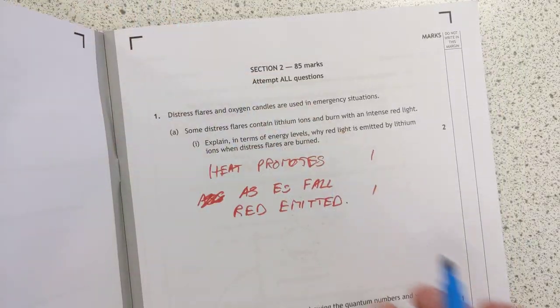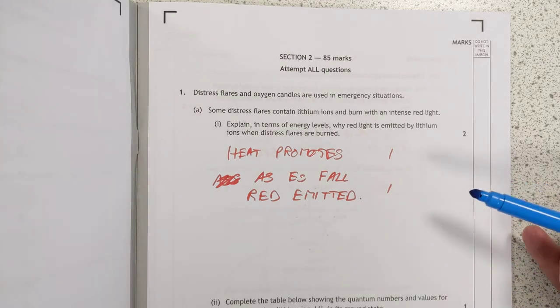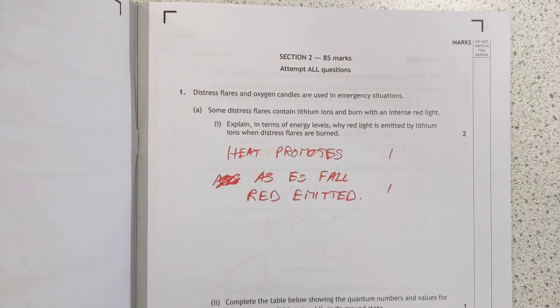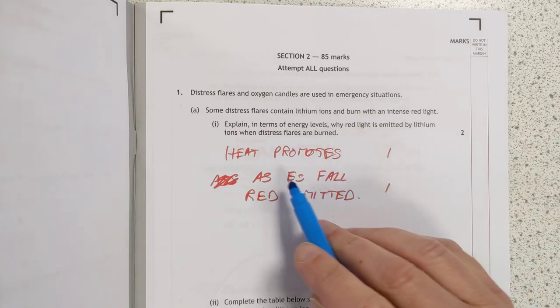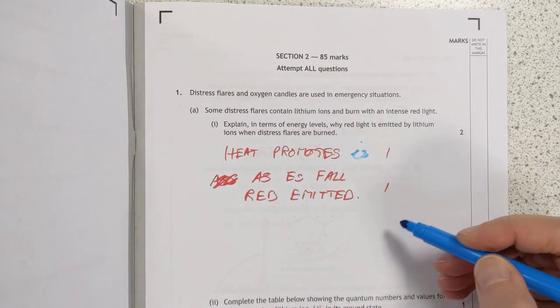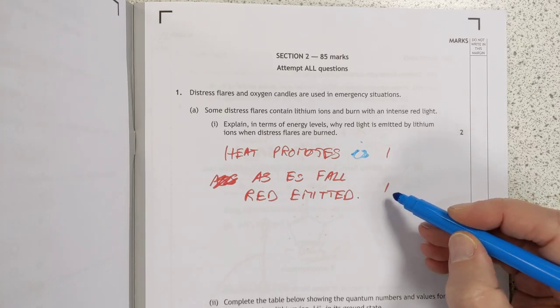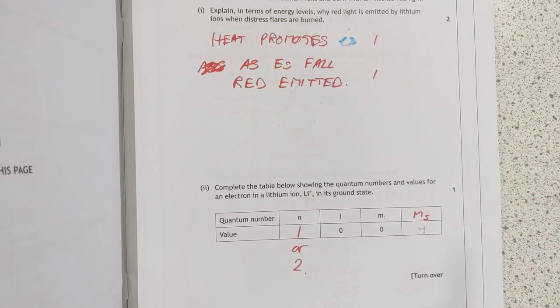All right, let's start. Advanced higher paper, too. Explain in terms of energy levels why red light is emitted by lithium. Hang on, two seconds, let me fix my seat. OK, it's emitted by lithium ions from distress, but I think one mark maybe for heat promoting electrons. And then as the electrons fall back down again to their base or their ground state, red light is emitted. I think, not entirely sure. As I said, I'm not the SQA.